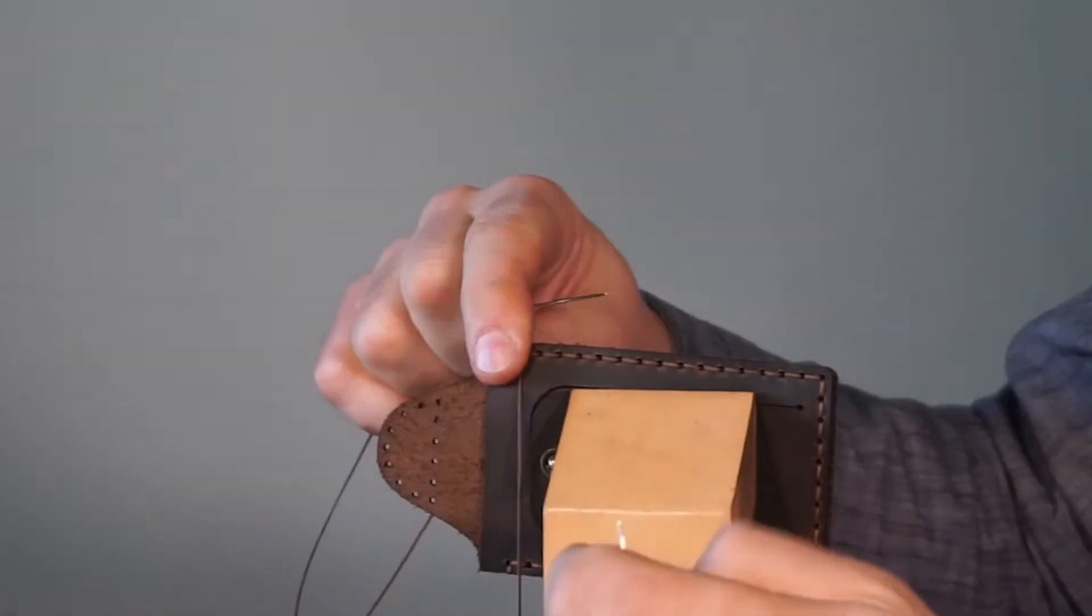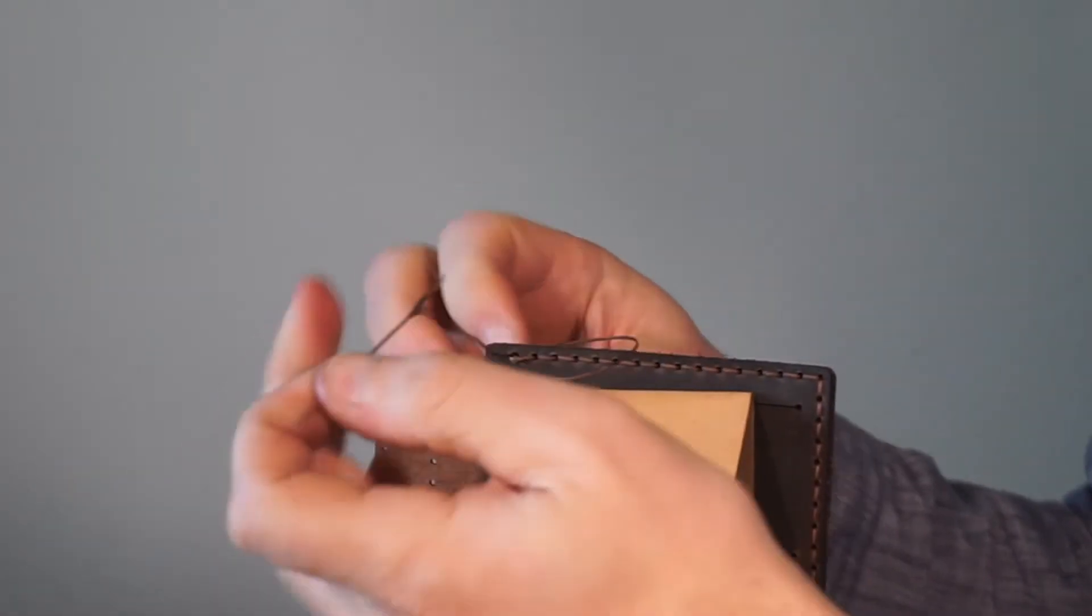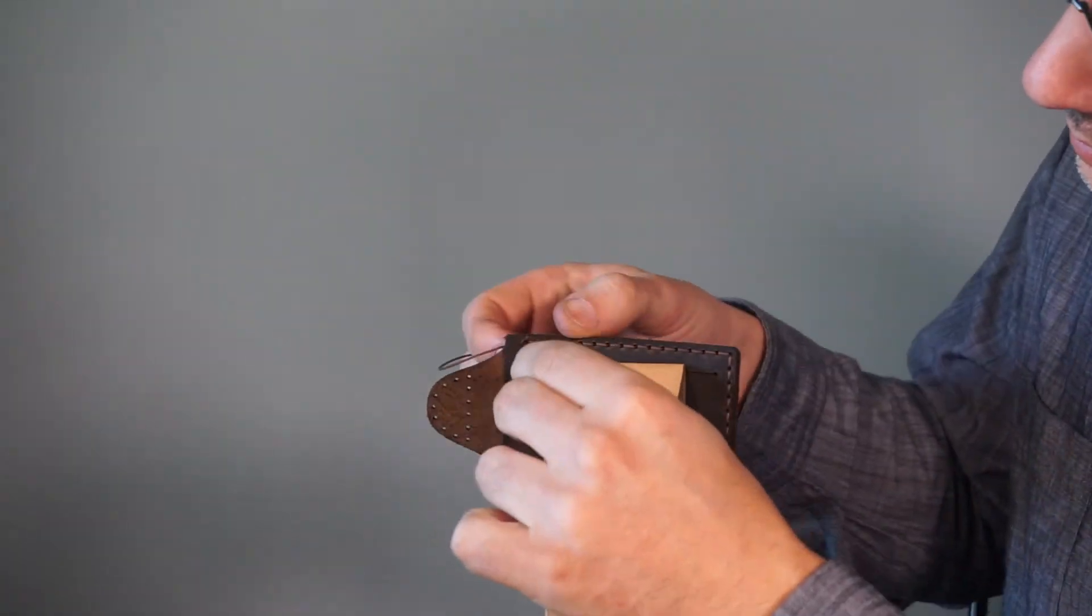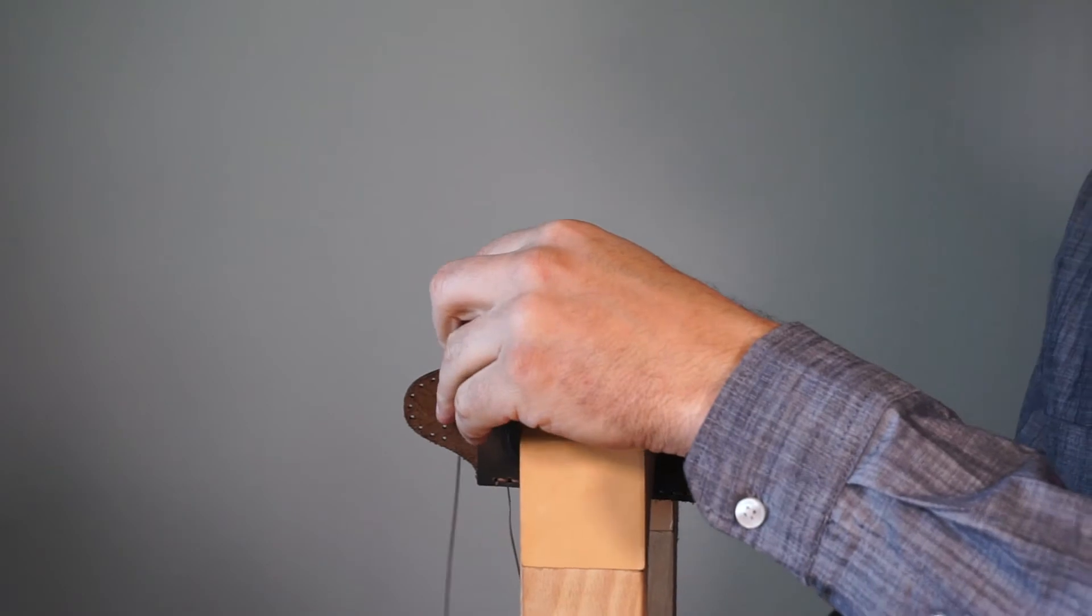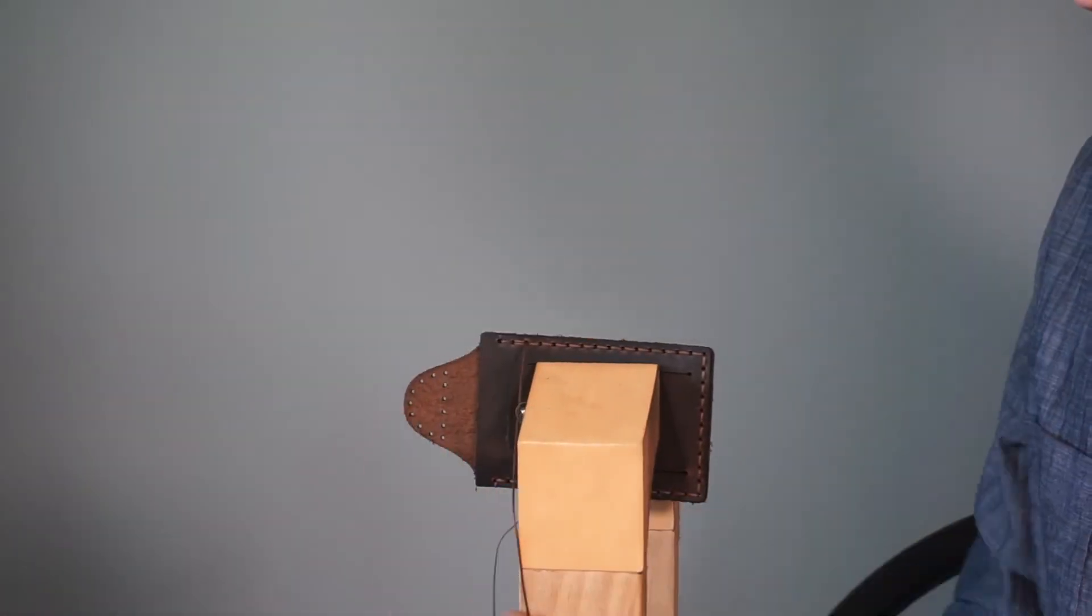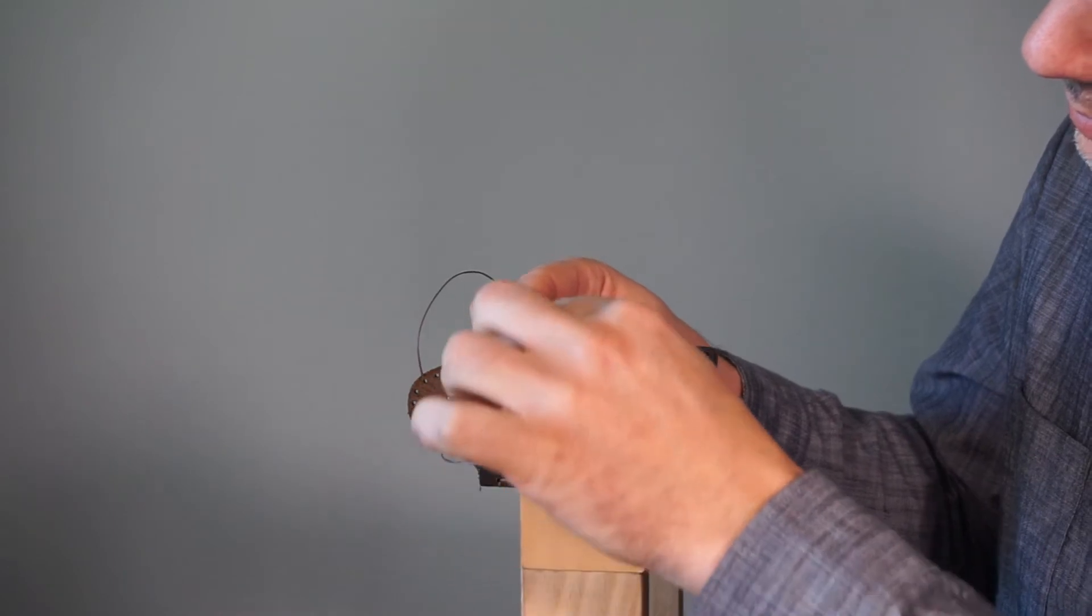When you get all the way to the other side, again take just your top thread and do a loop stitch around the outside. Now back stitch two or even three stitches and then an extra half stitch with just the top needle so both threads are now on the back side of the tag.